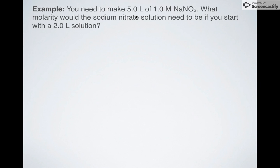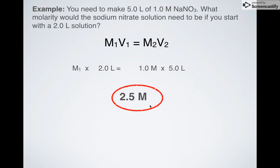Last one. I need to make a 5 liter solution of a 1.0 molar NaNO3 solution. So I'm making a sodium nitrate solution. What molarity would the sodium nitrate solution need to be if I started with a 2 liter solution? So once again don't know my initial molarity but I know I started with 2 liters of it. I made a 1 molar solution and it's 5 liters. So I need to figure out what M1 is. Again all I got to do is solve for M1. 1 times 5 divided by 2 is 2.5 and that's how you would solve pretty much any molarity question that you can think of.